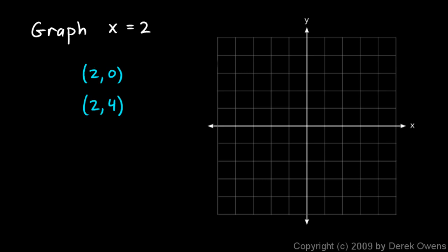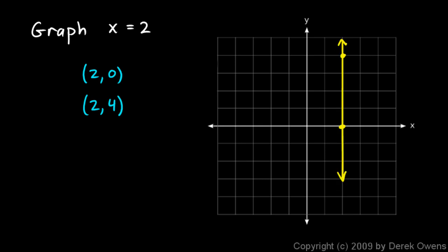Here are two ordered pairs — let's plot them. (2, 0) is this point right here: that's 2 to the right and 0 up or down. And then the point (2, 4) — we go 2 to the right and 4 vertically — so that's this point right here. You can see that we have a vertical line, and we'll draw it in. There we go. The graph of x equals 2 is a vertical line.